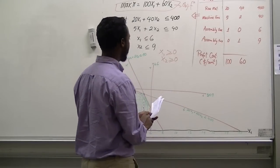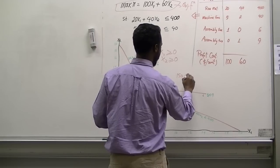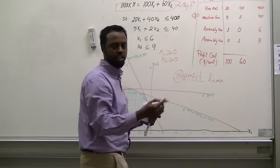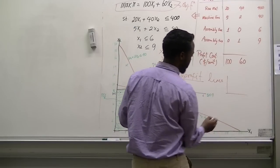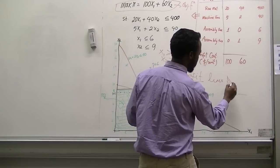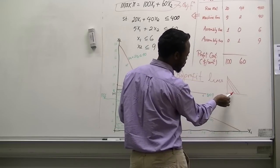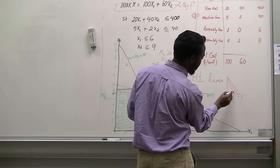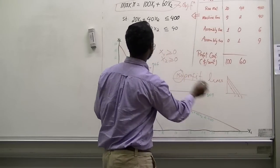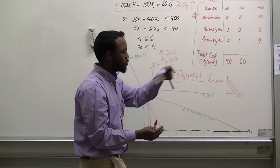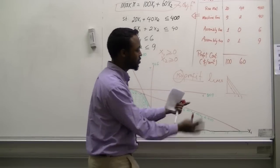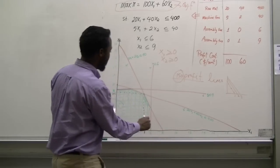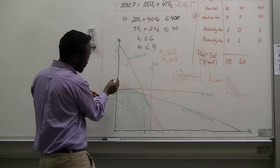It is also good to mention something called ISO profit lines. ISO simply means 'same profit.' These are lines on the graph where any point on a given line gives us the same profit. For example, whether we are at one end of the line or the other, we are getting the same profit — we are just changing the combination, more of one output or less of the other, but the profit remains the same.